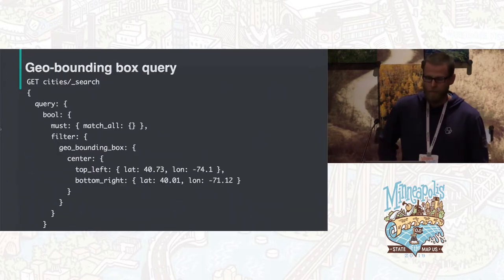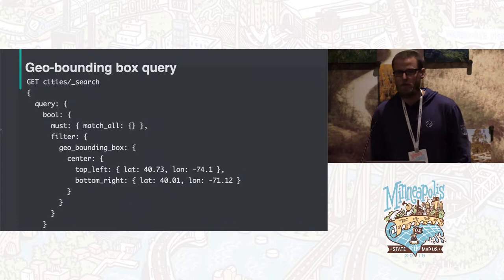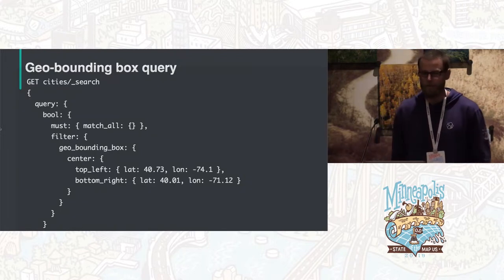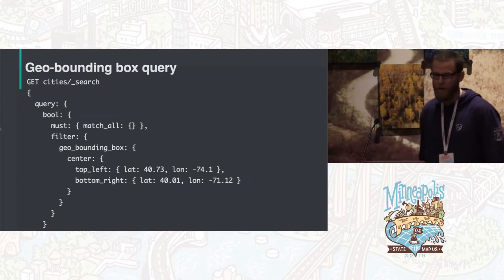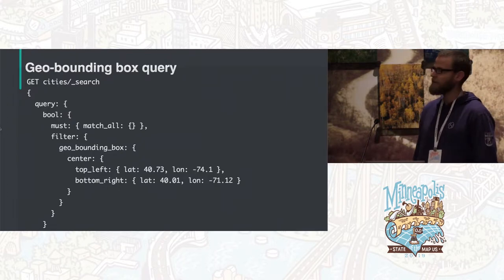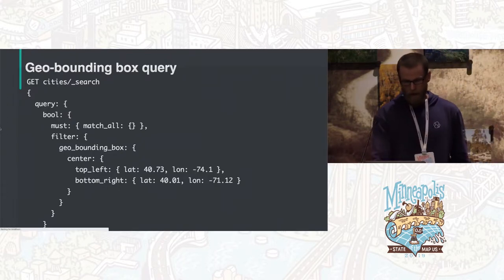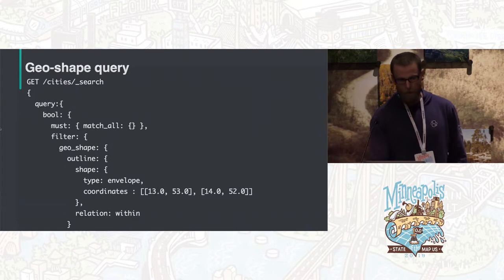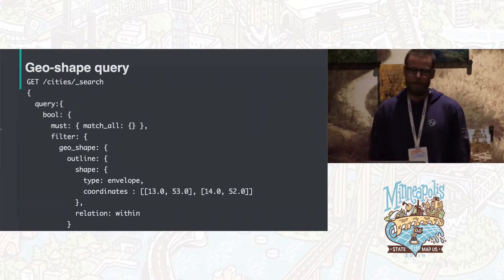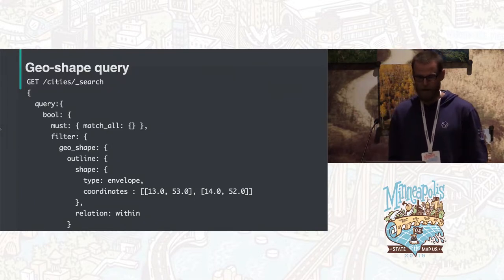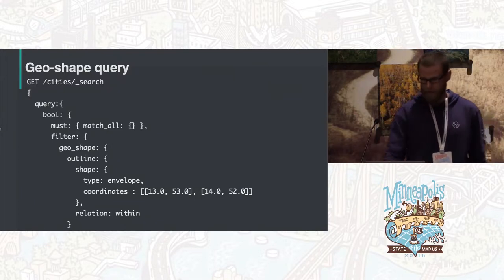Once you have geospatial data in Elasticsearch, you can start writing geospatial queries against it. For example, a bounding box query finds cities within that bounding box. You can also do more complicated queries — like using a city outline shape to find cities within an envelope that contain it.